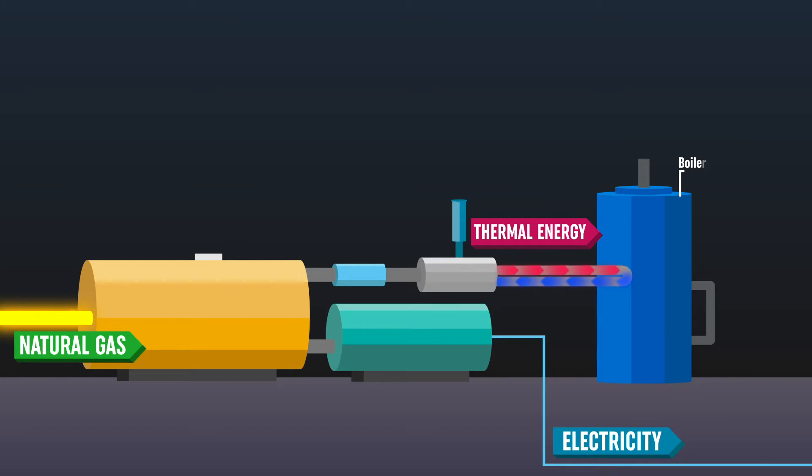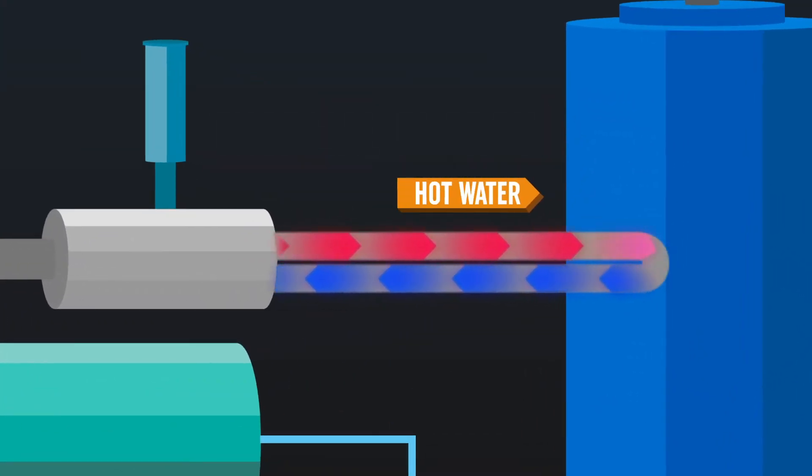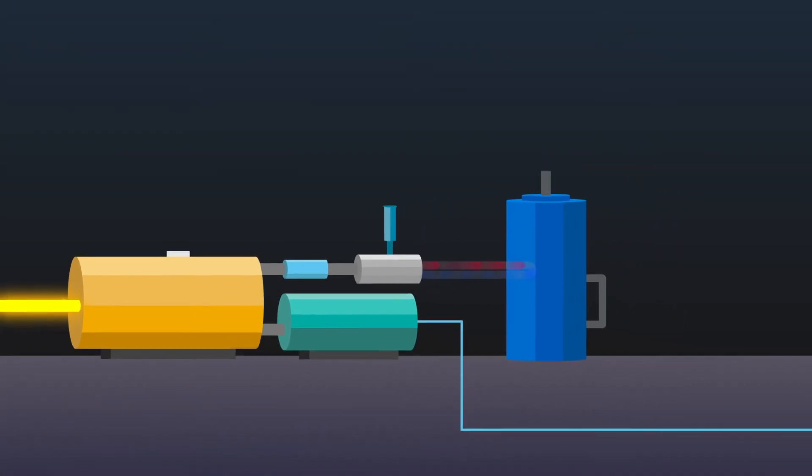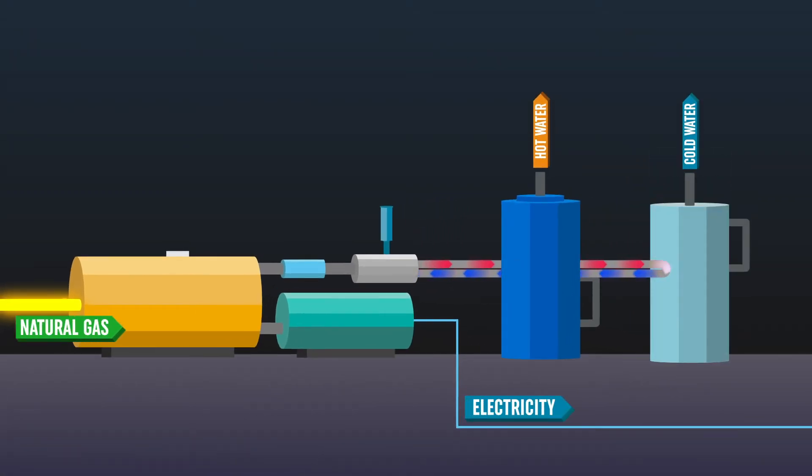This co-generation technique is a far more energy efficient way to generate your power needs than relying solely on a grid connection. Additionally, the CHP systems can be fitted with heat exchange modules, which direct the thermal energy to run heat applications or to an absorption chiller.